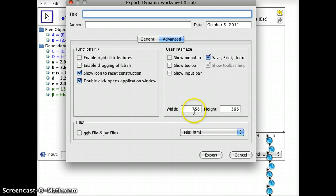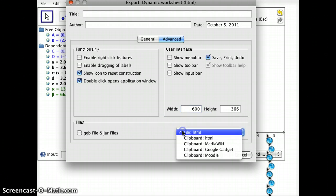But now what I'm going to do is first of all, make sure that this is small enough to fit on my Moodle page. So I'm going to change that from a 700 and some to 600 for a width. 600 is probably your ideal width for most Moodle themes. Then down here where it says File, I'm going to click on this and go to Clipboard Moodle.